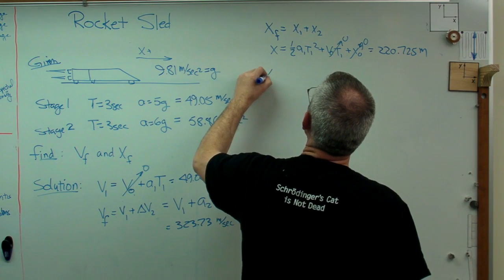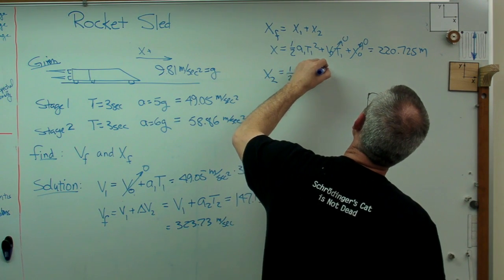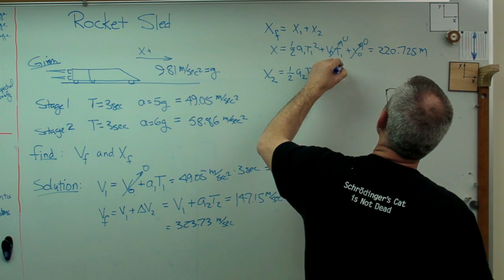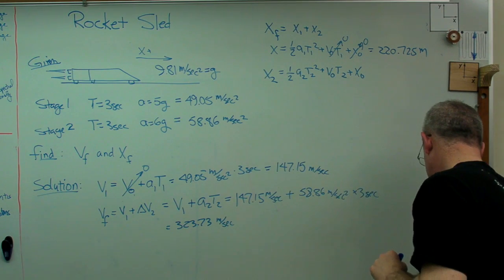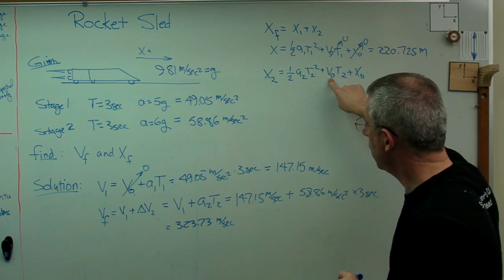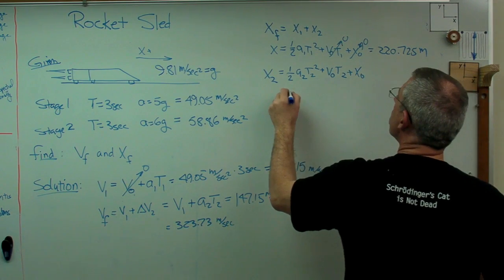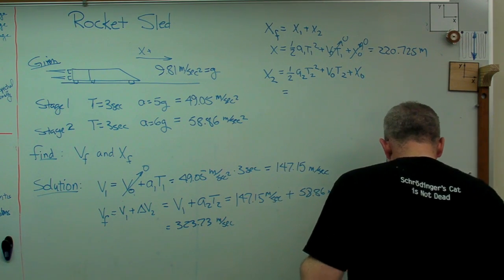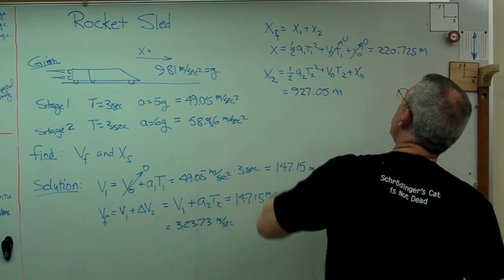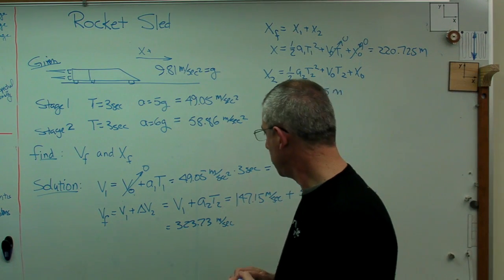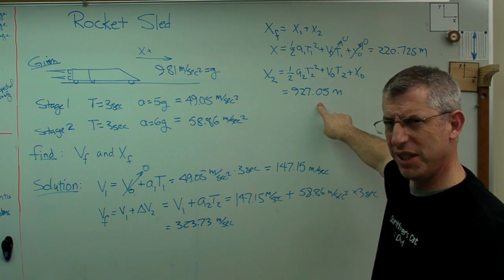And so X2 is going to be 1 half A2 T2 squared plus V0 T2 plus X0. Well, those numbers aren't zero anymore. So that's going to be V0, which is right there, T plus X0 and X0 is now 220. So if we put all those numbers in, we're going to get 927.05 meters. So in the course of six seconds, I've gone to almost Mach 1 and gone better part of a kilometer in six seconds. That's pretty good.